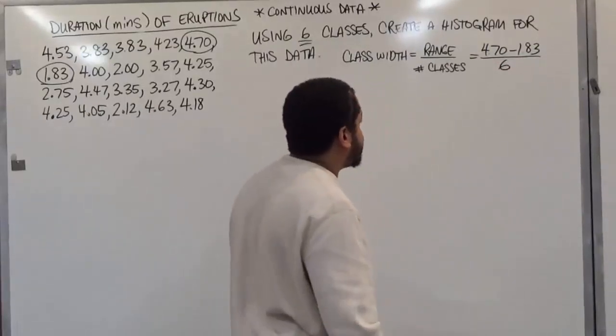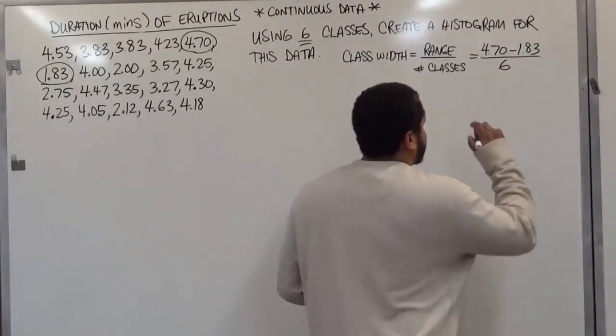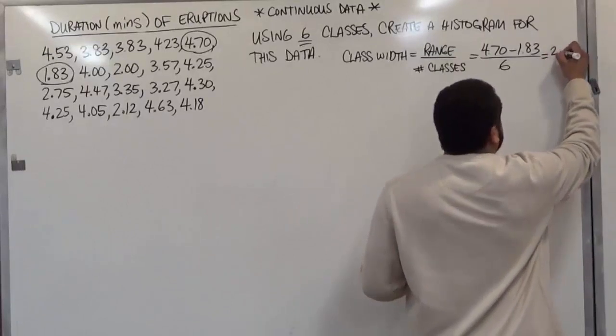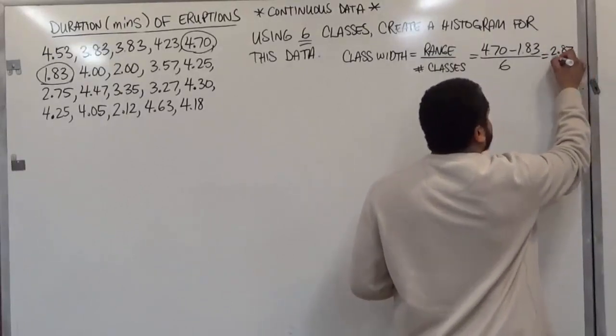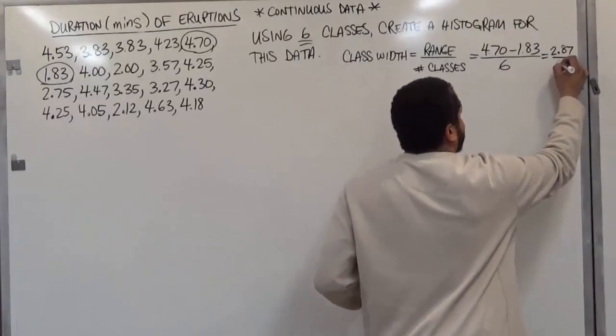And now the subtraction of 4.70 minus 1.83 is 2.87. Make sure you use the calculator to do these calculations. And we're dividing that number by 6.